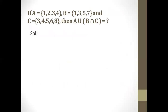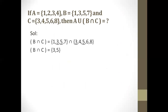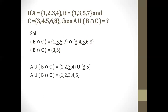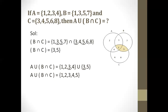Here is another question with the same sets. This time we have A union (B intersection C). Be careful — you must solve B intersection C first. The common elements of B and C are 3 and 5, so B intersection C equals {3, 5}. Then we take the union of this result with set A, giving us 1, 2, 3, 4, and 5, where 3 is common to both.